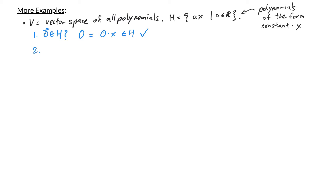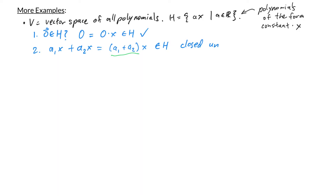Second, is H closed under vector addition? Take two arbitrary elements in H: A₁·x and A₂·x. Adding them gives (A₁ + A₂)·x. Since A₁ + A₂ is just some constant, the result is a constant times x, which means the sum is in H. So H is closed under addition.